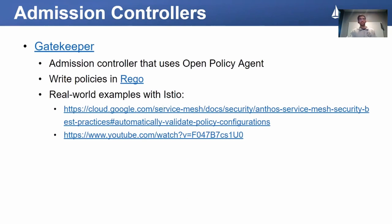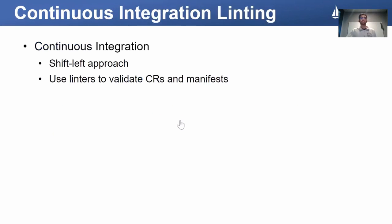One great solution for defining these policies is Gatekeeper, a Kubernetes admission controller that enforces policies through the Open Policy Agent. You can write these policies in a language called Rego, and the examples I've linked here provide real-world examples of how Istio custom resource policies could be defined in Rego for Gatekeeper. In addition to admission control, you could take a shift-left approach and do these validations at a CI level with linters that validate Istio manifests before being pushed to production, using validating webhooks in Kubernetes as a last line of defense.